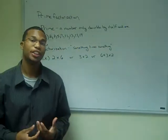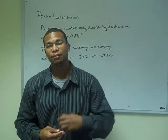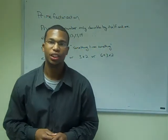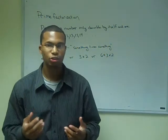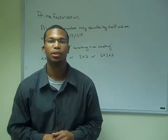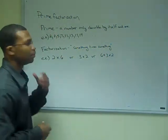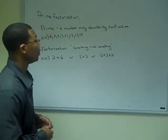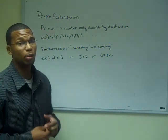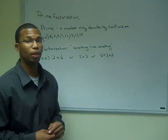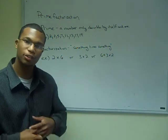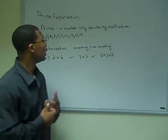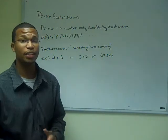To conquer step one, we need to find out what prime factorization means. Prime factorization is made up of two separate concepts. The first concept is a prime number. A prime number is a number that is only divisible by itself and one. Some examples of prime numbers would be 2, 3, 5, 7, 11, 13, 17, 19.